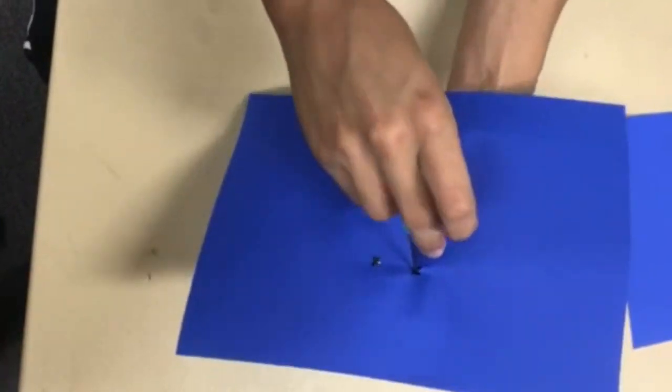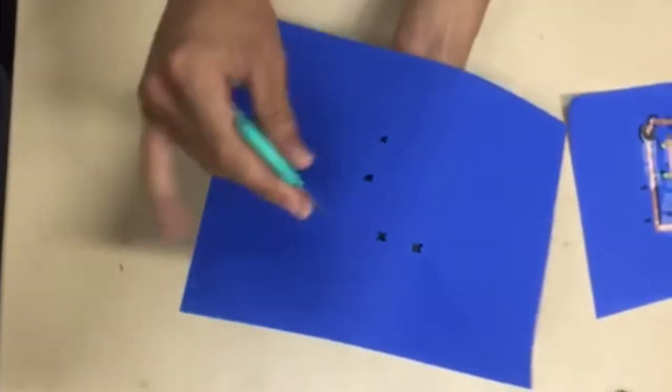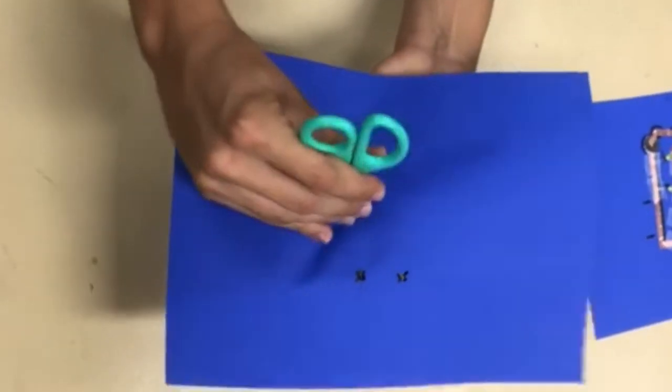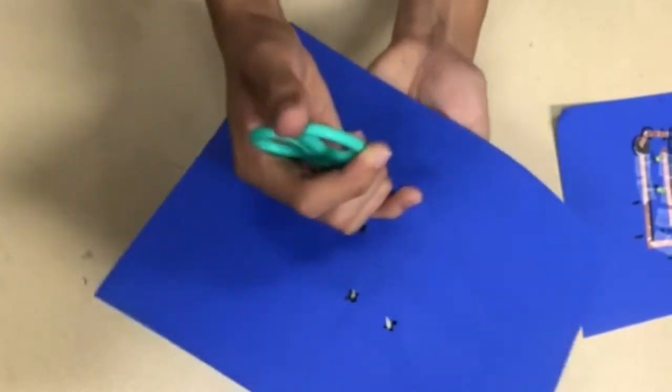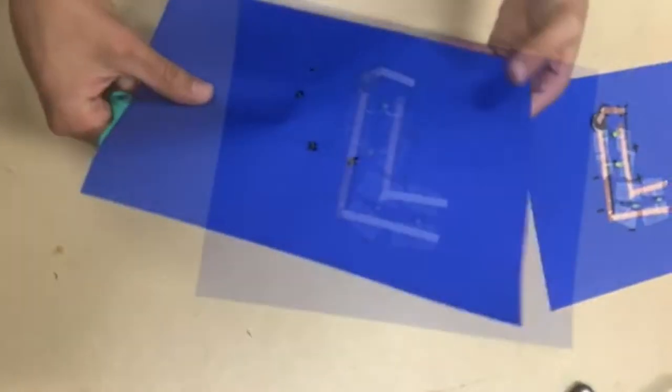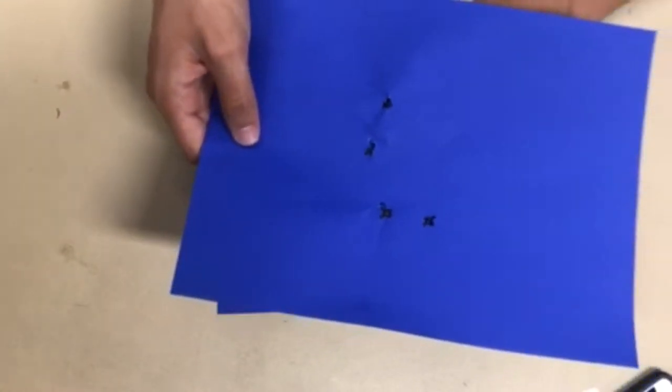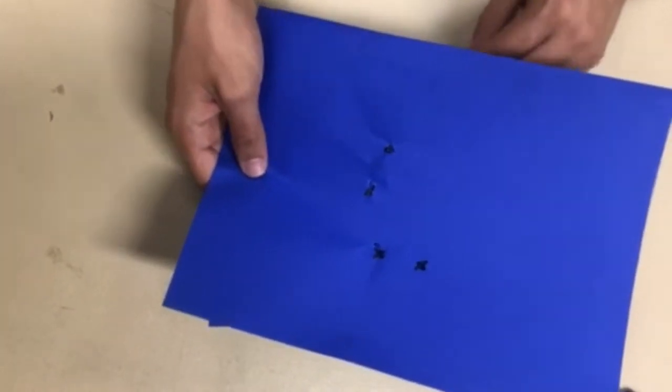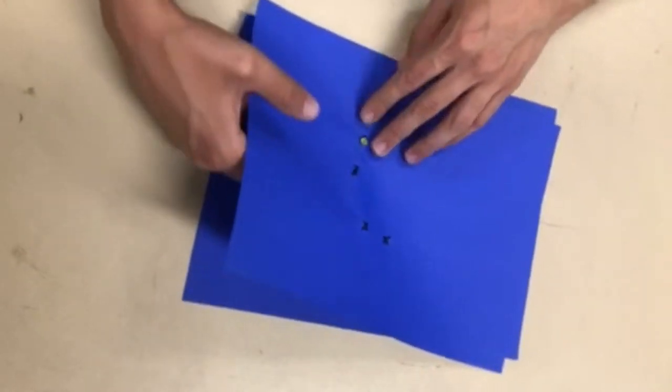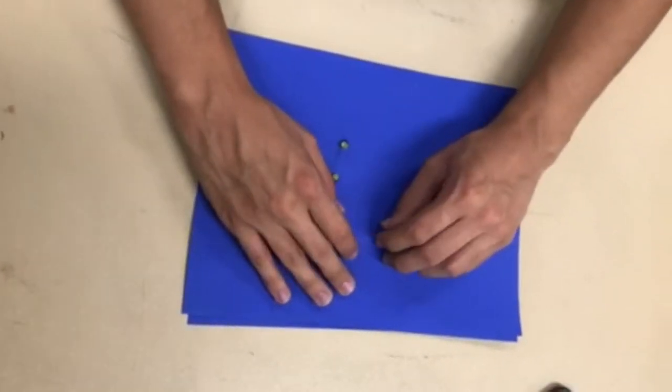Then you have to make holes so the lights can go through the other paper, so it can be hiding the copper tape. Perfect fit.